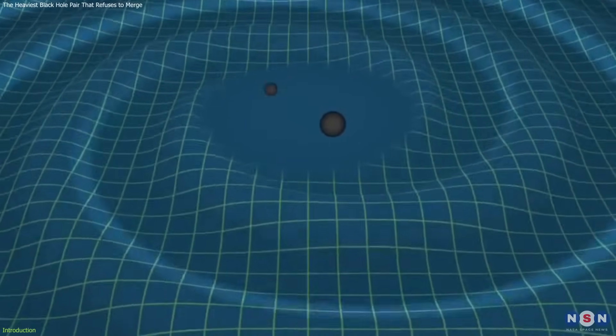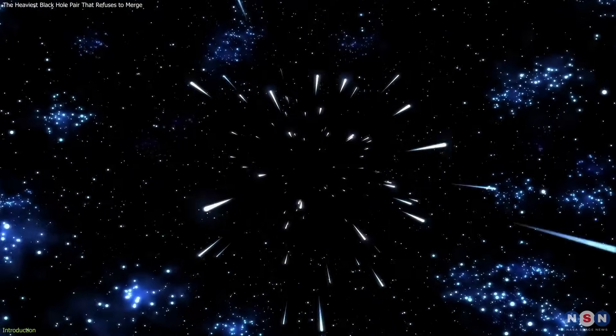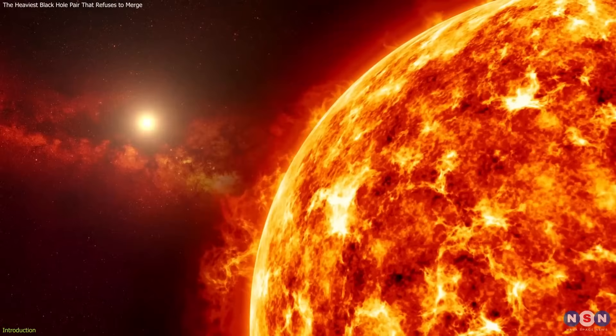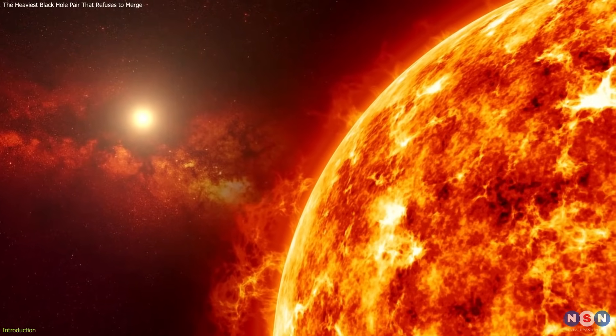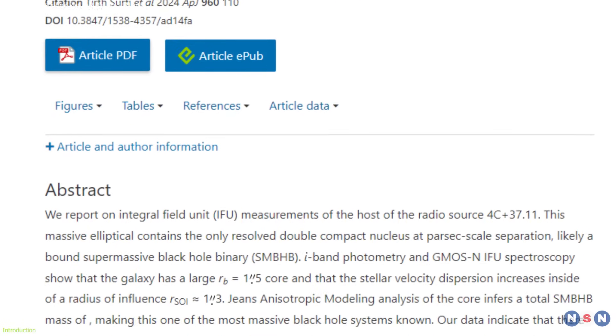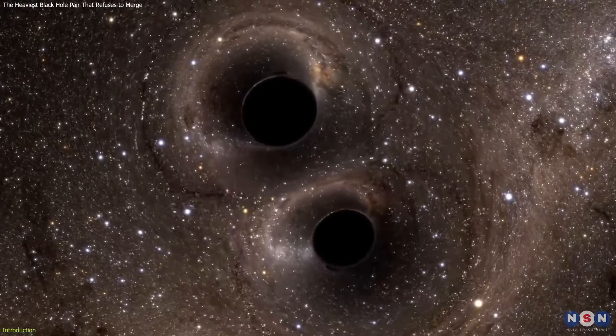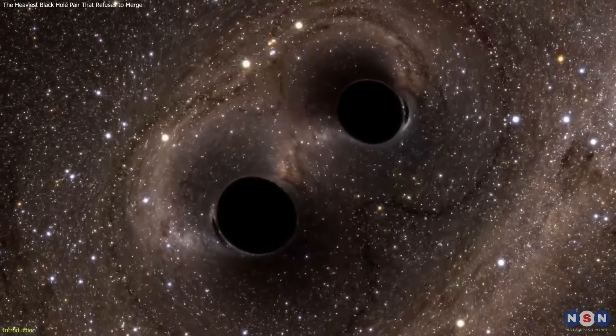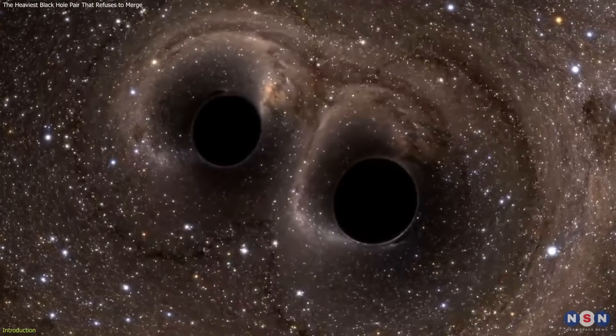They are also the closest black hole pair ever spotted, at just 24 light years apart - about the distance from the sun to the nearest star. This discovery has huge implications for our understanding of how supermassive black hole mergers are formed and observed, and why they are so elusive and hard to detect.